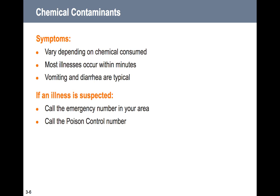Symptoms of chemical contaminants vary depending on the chemical consumed. Most illnesses occur within minutes and usually involve vomiting and diarrhea. If someone is experiencing a chemical contamination, examine the chemical safety data sheet you should have on hand for any chemicals used in your restaurant. If you suspect chemical contamination, call the emergency number for your area and the poison control number.